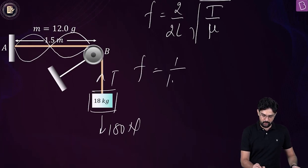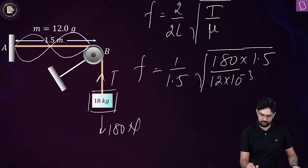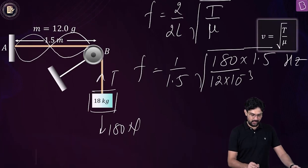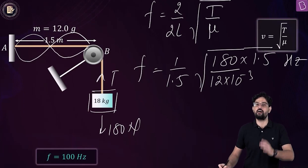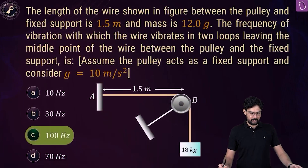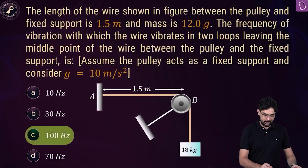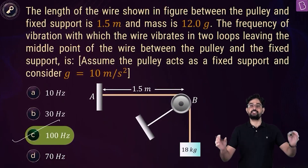After simplifying, you get the frequency equal to 100 Hz. So when segment AB is vibrating with a frequency of 100 Hz, you would see two loops in this segment.